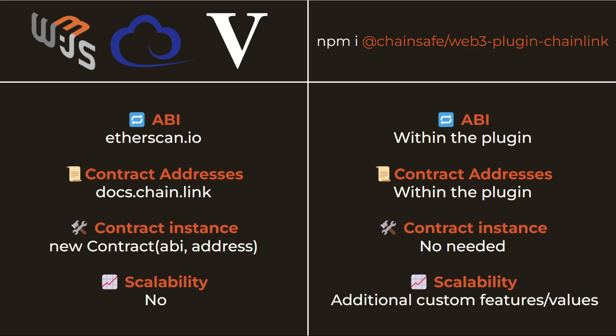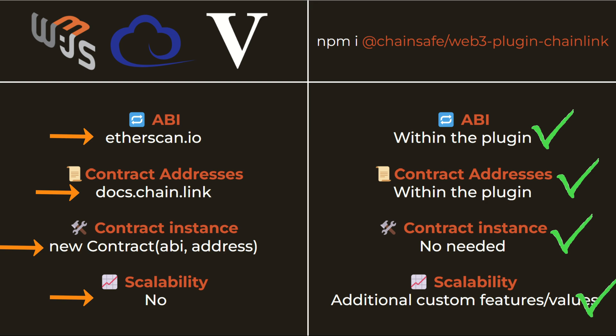Remember that using the libraries you need to search for the ABI of the contract and import it, while using the plugin the ABI is already stored in the plugin. With the libraries you also need to look for the contract address of the pair you want to call, while with the plugin the contract address is already stored and ready to use. Using the libraries you must create a new instance of the contract to interact with it; with the plugin this instance is already created and you can skip this step. The libraries may not be as scalable, since every time you create any functionality you must rewrite it. While using the plugin allows you to create any extra functionality and store it within the plugin, making it available for everyone at any time.